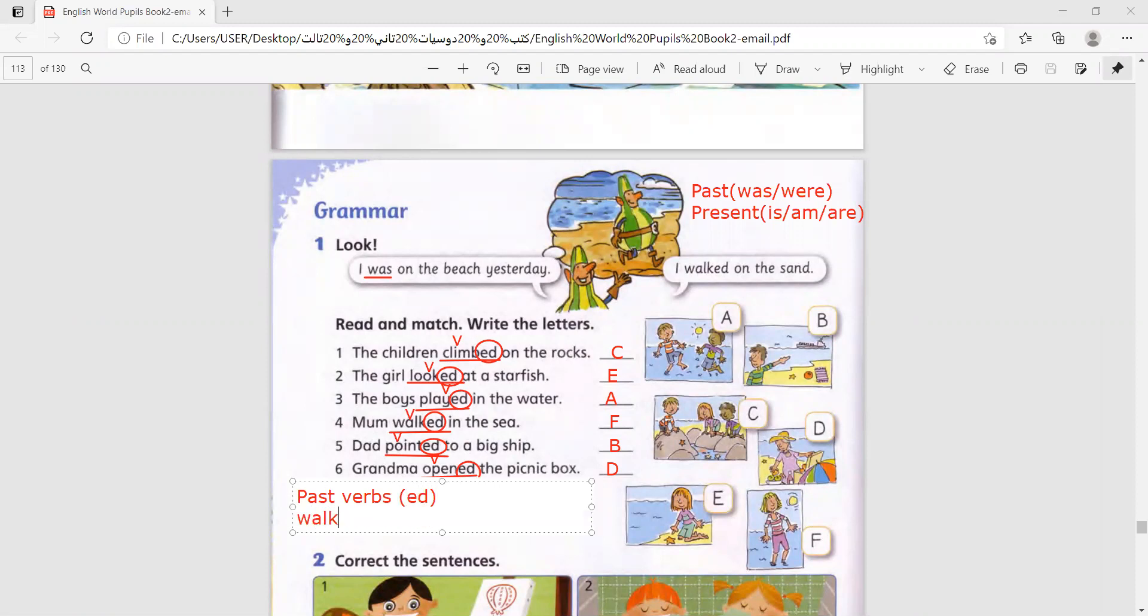Such as walked, talked, watched. So, when you see a verb that ends with E-D, you know that it is talking about the past. When the verb ends with E-D, it is about the past.